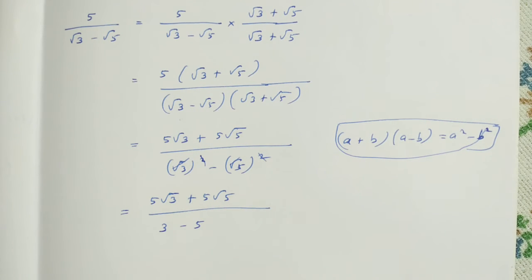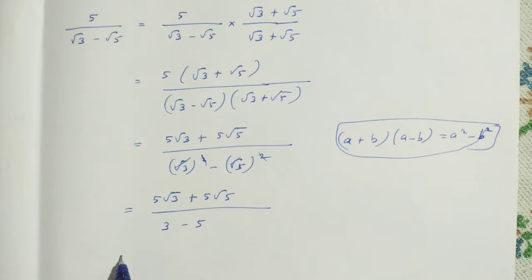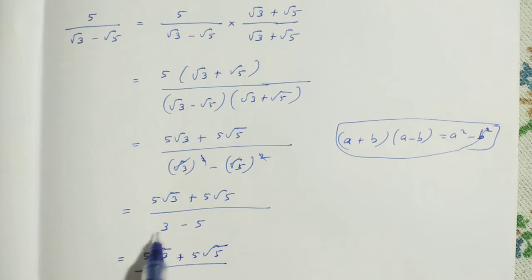Alternatively, root 3 times root 3 equals root of 3 times 3, which equals 3. Now, 5 root 3 plus 5 root 5 divided by 3 minus 5, which equals minus 2. So now we have rationalized the denominator.